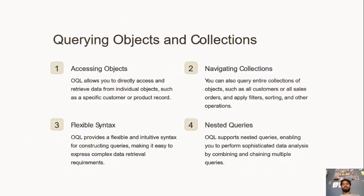Navigation collections include collections such as all customers or sales orders. For example, in a college it has all students and their details. A best example is Flipkart or Amazon, where you can apply filters for ordering desired products. Flexible syntax in OQL helps for constructing queries, making complex data retrieval into an easy one. Nested queries enable us to perform complicated data tasks by combining and chaining multiple queries.